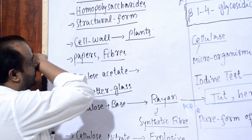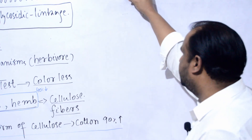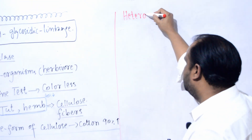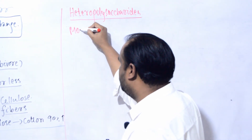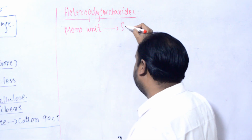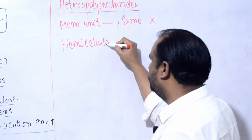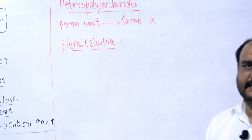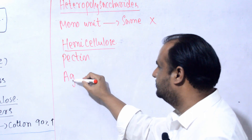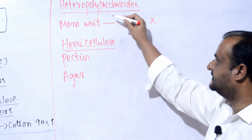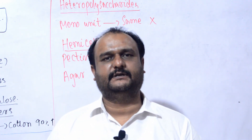Student aapko yaad hoga humne homopolysaccharide ke alaawa heteropolysaccharide ka bhi zikr kiya tha. Heteropolysaccharide - jinmein mono units same nahi hote - main example aapko bahut saari di: jaise hemicellulose hai, jisme cellulose bhi hai, khud hemicellulose bhi hai, xylan bhi hai, further other structures bhi maujood hoti hain. Jaise pectin hai, jaise agar hai, jaise isabgol hai - yeh saari ke saari examples hain heteropolysaccharide ki, jisme glucose ka same unit nahi hota. Toh student yeh humne aaj padha polysaccharide ke baare mein. Thank you very much.